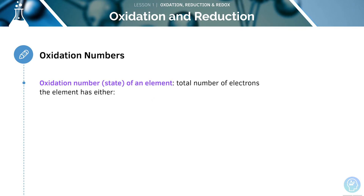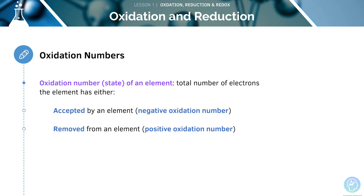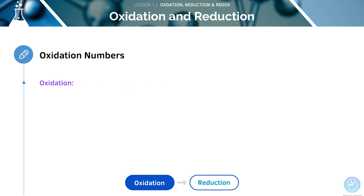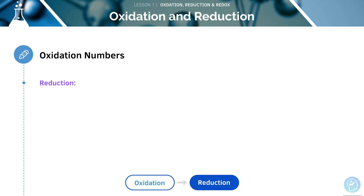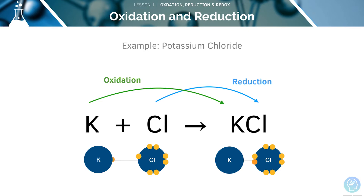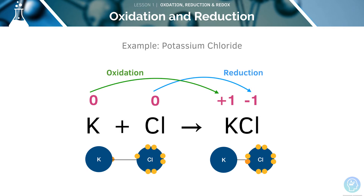The oxidation state of an element represents the total number of electrons that the element has either accepted or donated to get to its current form. If an element undergoes oxidation, it will increase in oxidation state; if it undergoes reduction, it will decrease in oxidation state. In this reaction, the potassium lost an electron to form K⁺ — its oxidation number increased by one — whilst chlorine gained an electron to form Cl⁻, so its oxidation number decreased by one.